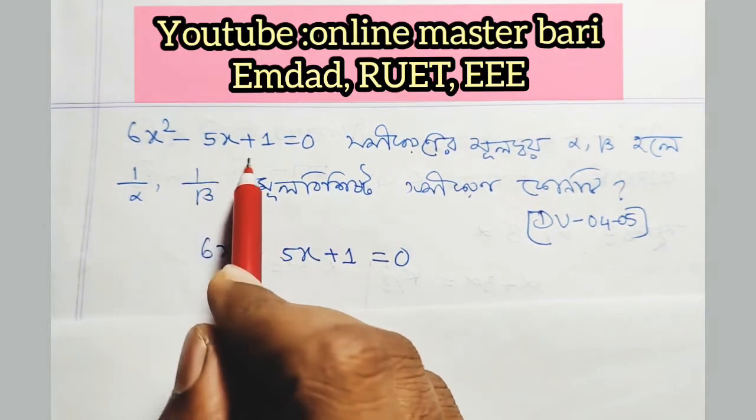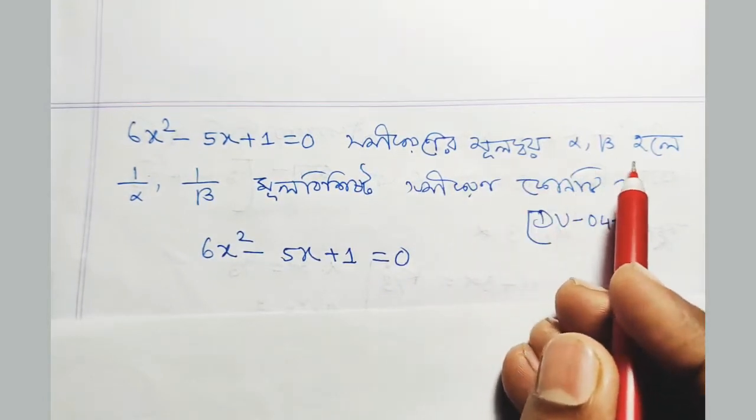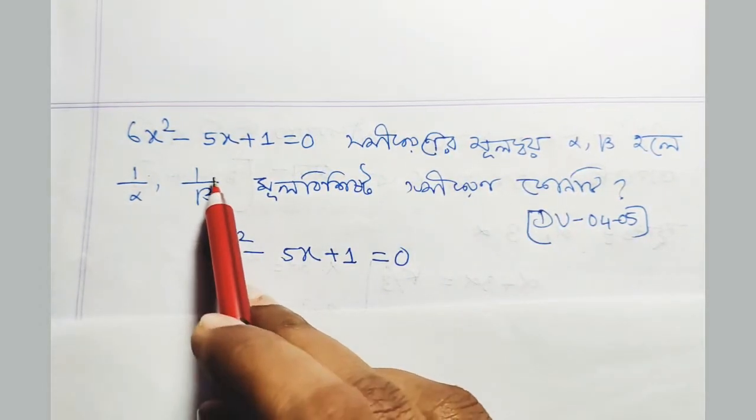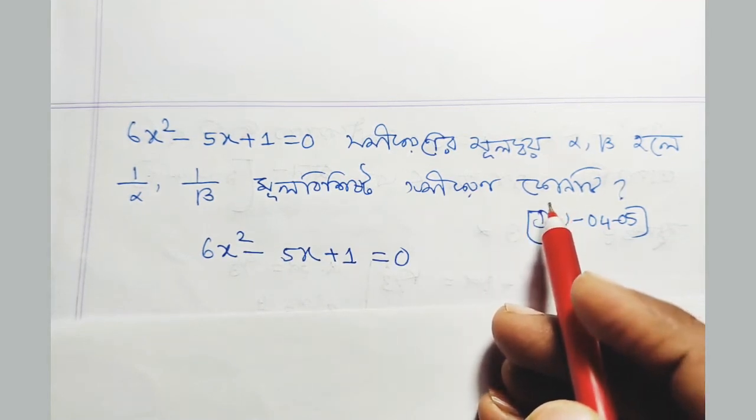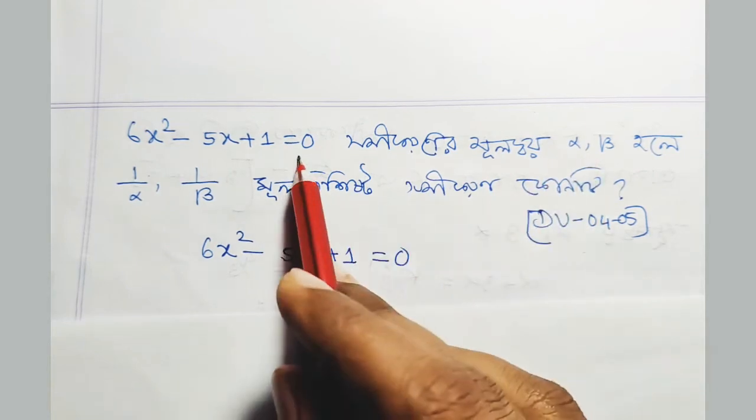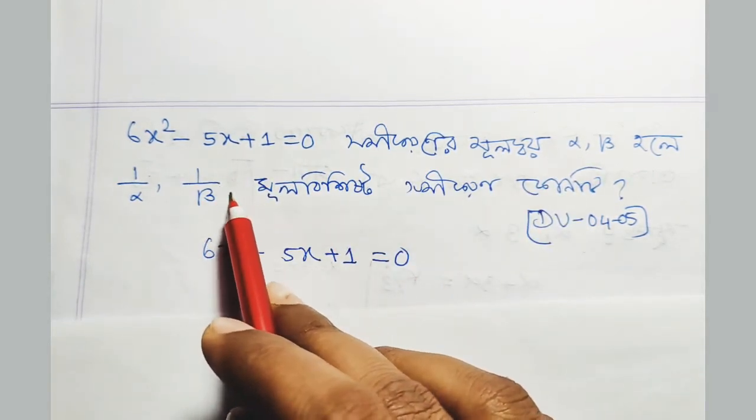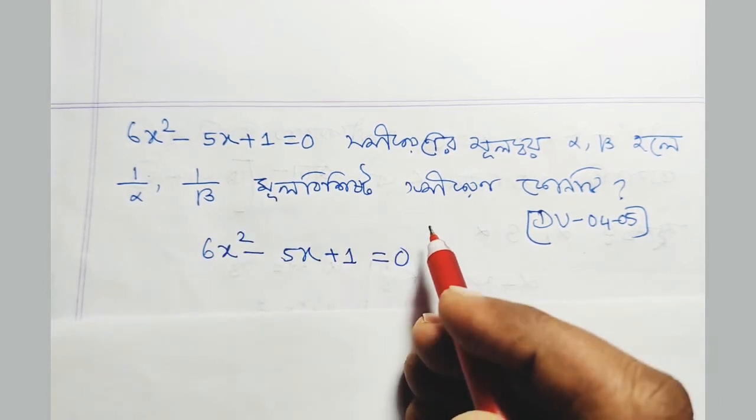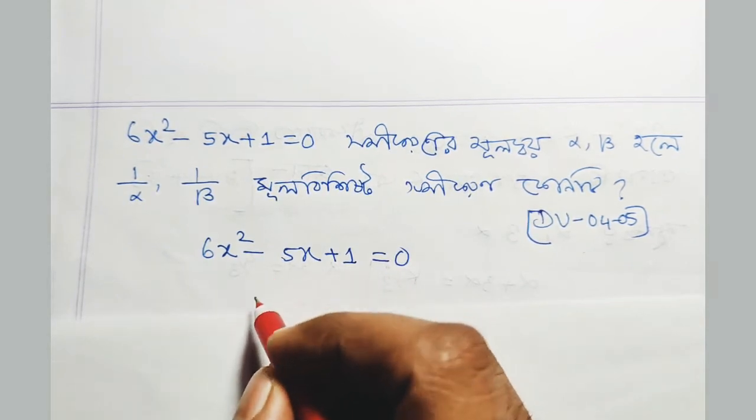Let's start with 6x² - 5x + 1 = 0. We need to find the relationship between alpha and beta. If alpha and beta are the roots, we need to determine what their sum and product will be.